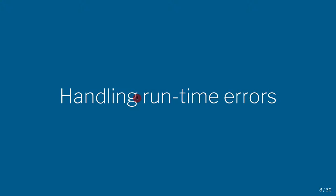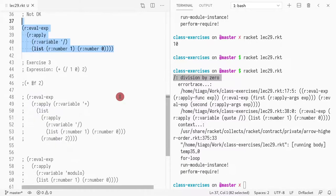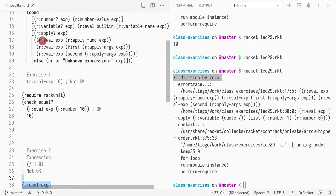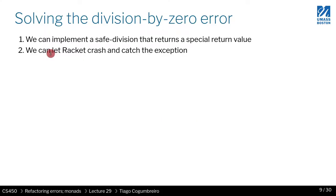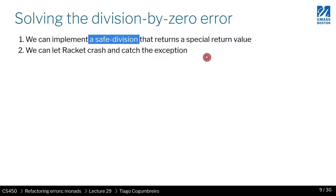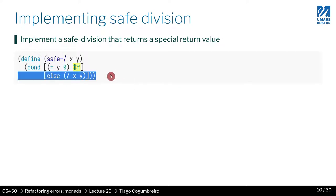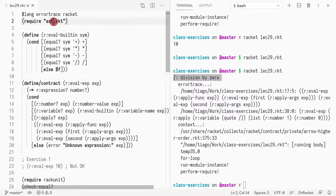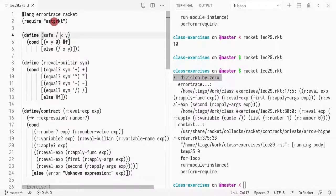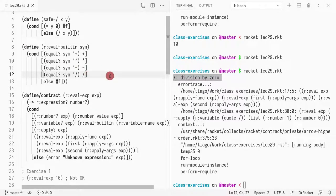One way we can handle this is to return a special value proactively whenever there's going to be a division by zero and let the user know when that value is not valid. In Racket tradition we could just return false. So let's implement a safe division: safe-div takes x and y — if y is zero then return false, otherwise just do the division as normal.